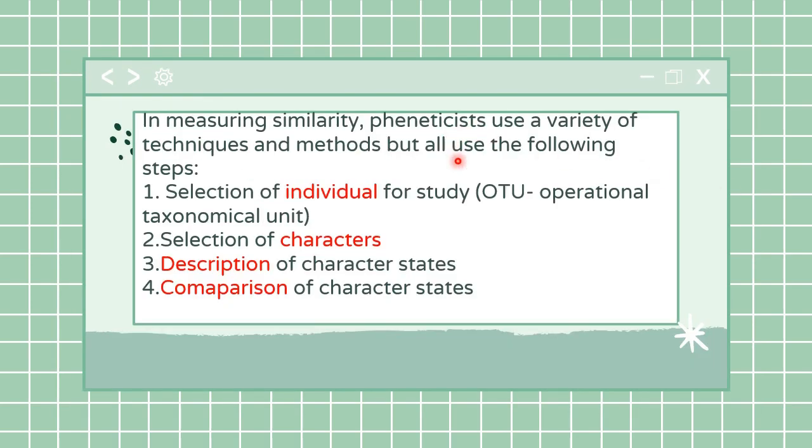Pheneticists are the people who make phenograms. While making phenograms there are certain steps that have to be followed. Number one: select the individual for studies - any species of plant or animal could be selected, known as an operational taxonomical unit or OTU. Second is selection of characters - what kind of characters you want in your study, it could be tail, eyes, anything depending on the organism selected.